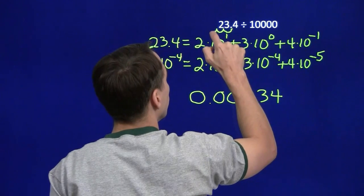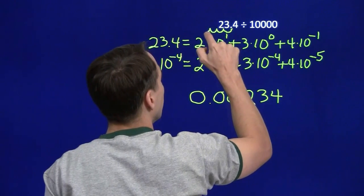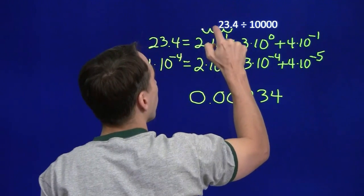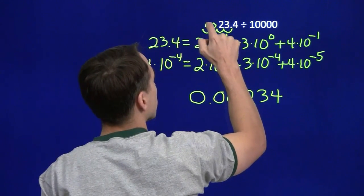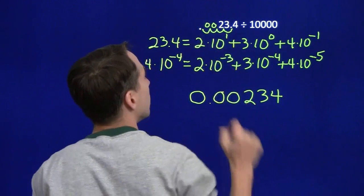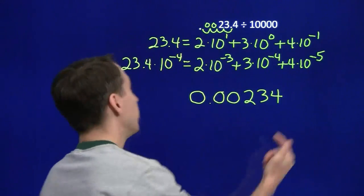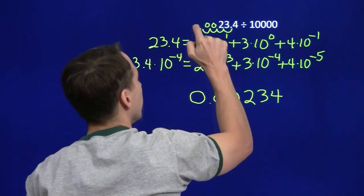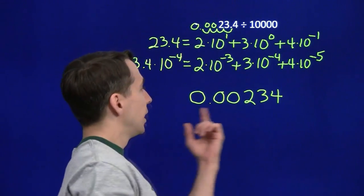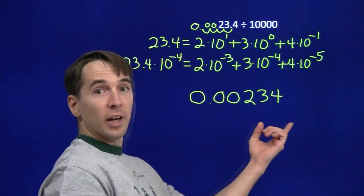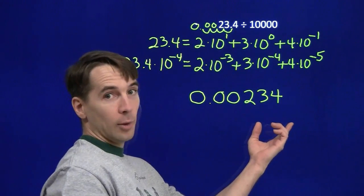We see that when dividing by powers of 10, instead of moving the decimal point to the right, we're moving it to the left. Dividing by 10 to the fourth means we move the decimal point four places — one, two, three, four — and drop in the extra zeros to show those extra spaces to the left. And here's our final answer, and we're done.